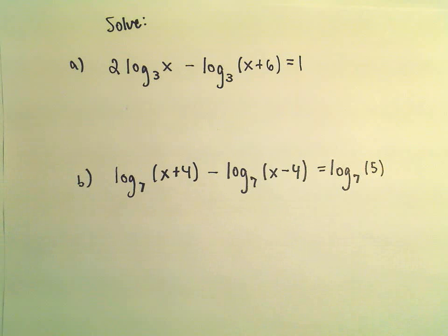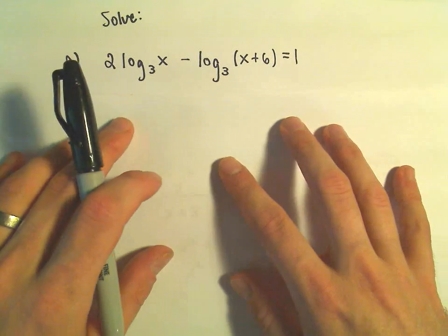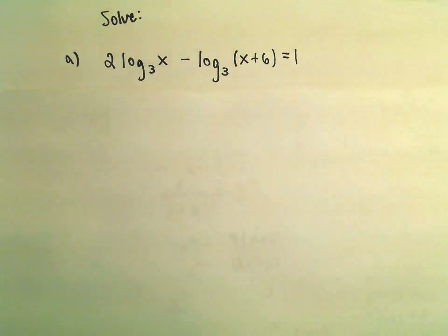In problem A here, we're going to solve 2 times log base 3 of x minus log base 3 of x plus 6 equals 1. The first thing I'm going to try to do on the left side is rewrite this all as a single logarithm.